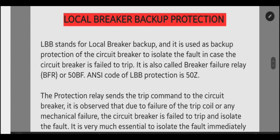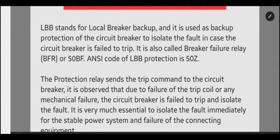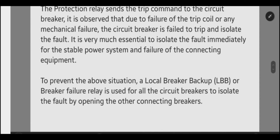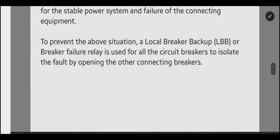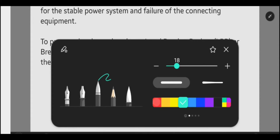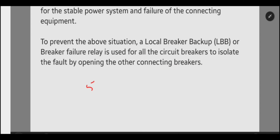If any fault occurs in the transmission line — suppose a distance fault happens — and due to any reason like mechanical failure or electrical failure of the breaker, the breaker associated with the fault fails to trip, then the LBB backup protection initiates. This LBB protection is also written in the relay as 50Z or 50BF, that is bus failure relay.